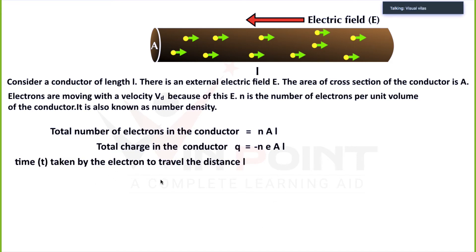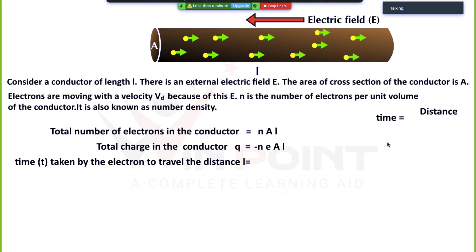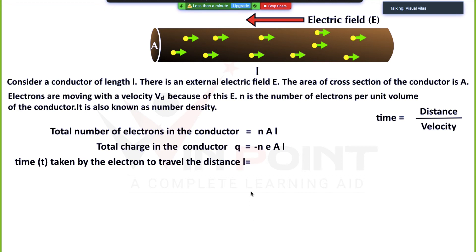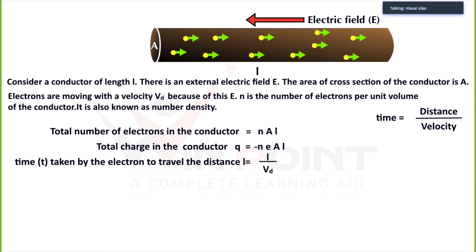Time taken by the electron to travel distance L — time is equal to distance divided by velocity. The electrons are traveling a distance L because L is the length of the conductor. The velocity of each electron is the drift velocity Vd, so time T equals L divided by Vd.